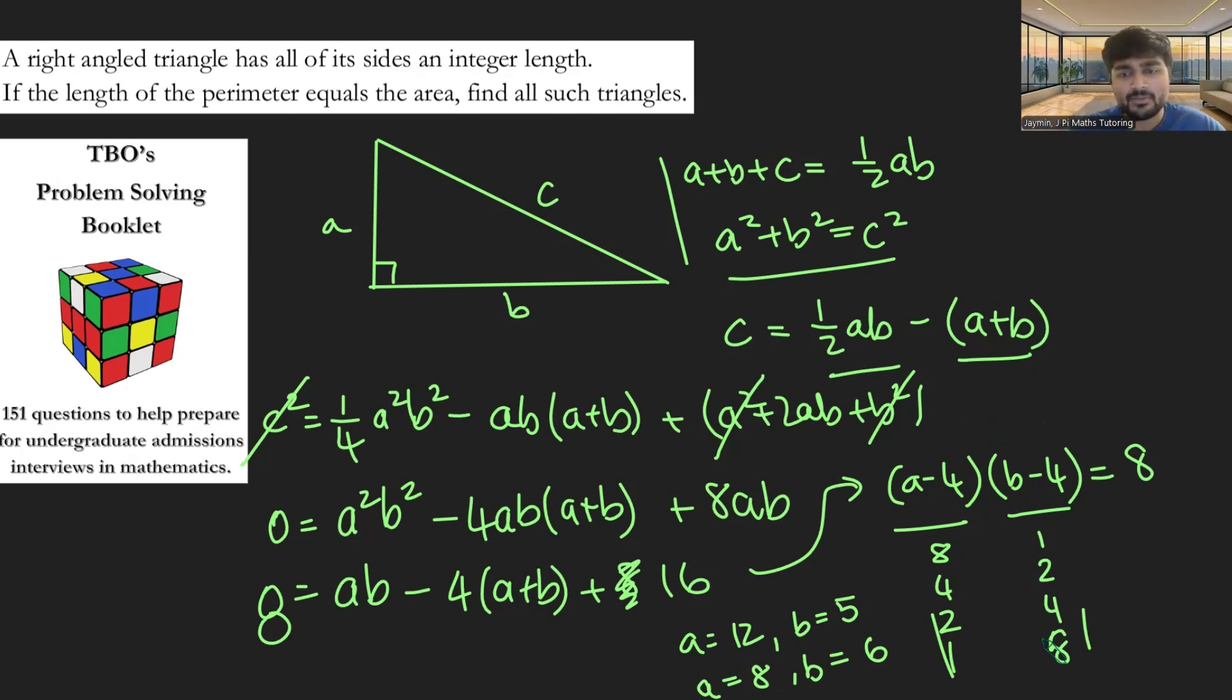And then these two guys are just going to be them swapped around. So there's four possible triangles here, and I guess these guys are the same as those guys. So in reality, there's only two possible triangles. One where A is 12, B is 5, which would make C 13. And one where A is 8, B is 6, and making C 10.